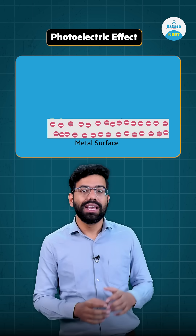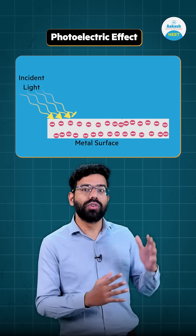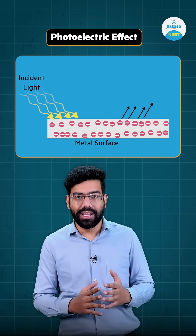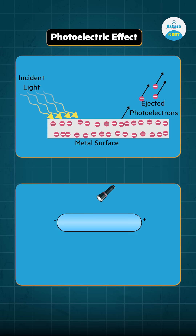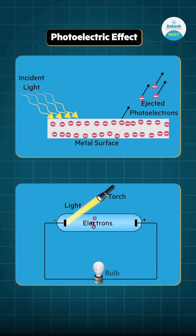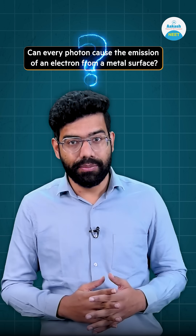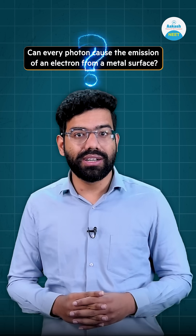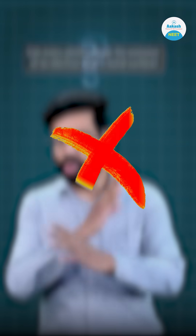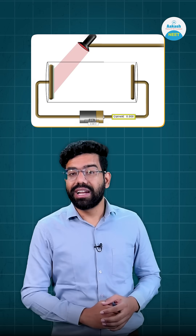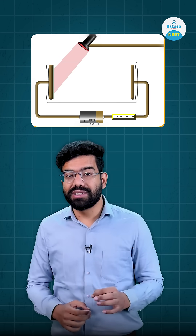In the photoelectric effect, a metal surface absorbs photons of light and emits electrons, which can be used for the flow of current. But can every photon emit an electron from a metal surface? No.